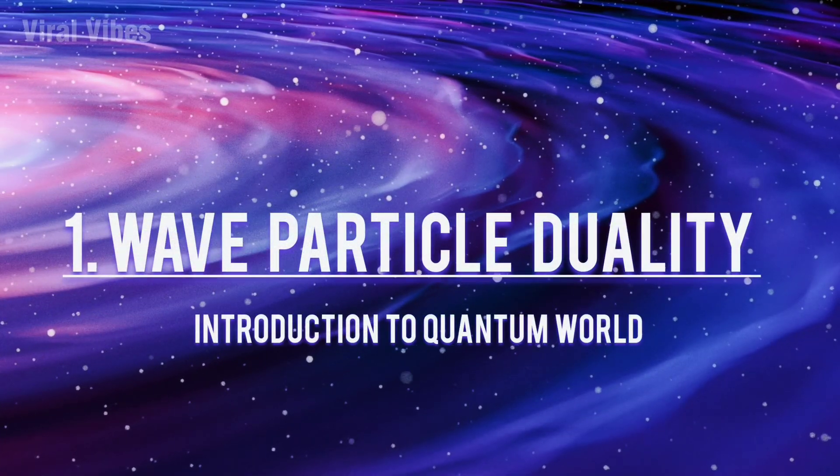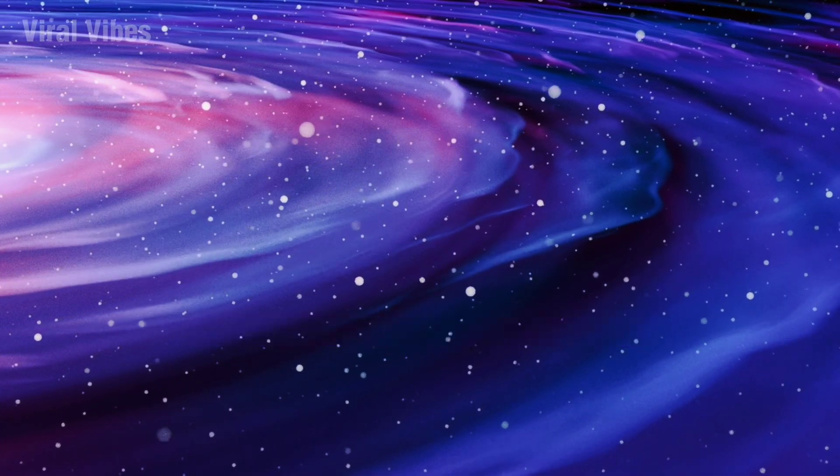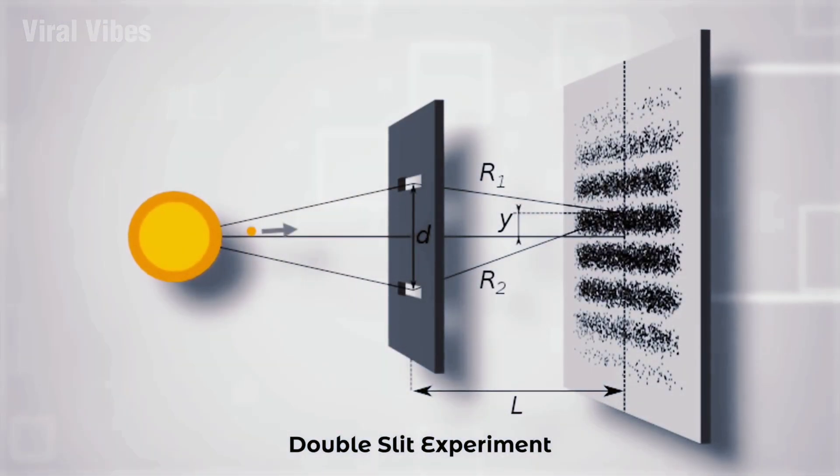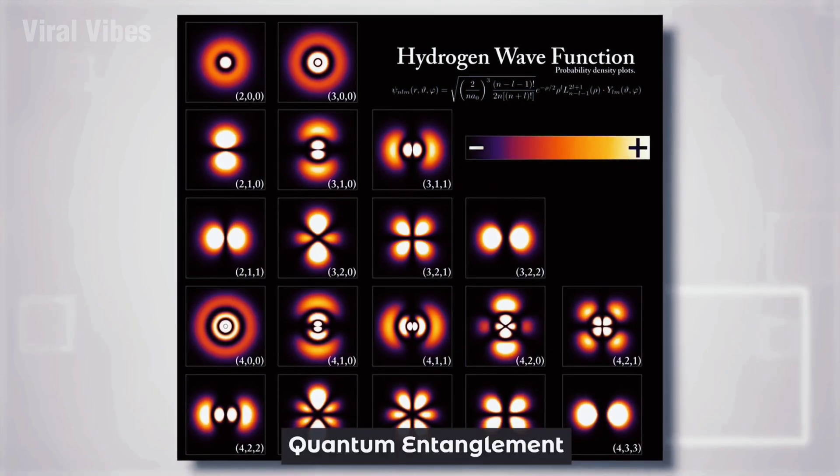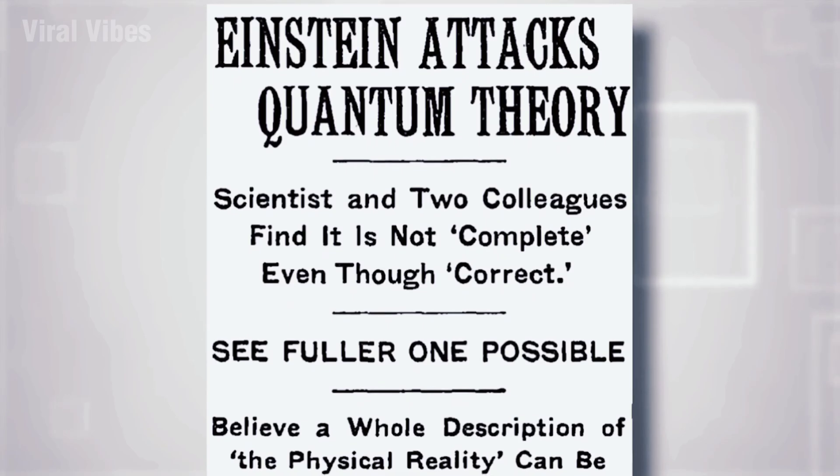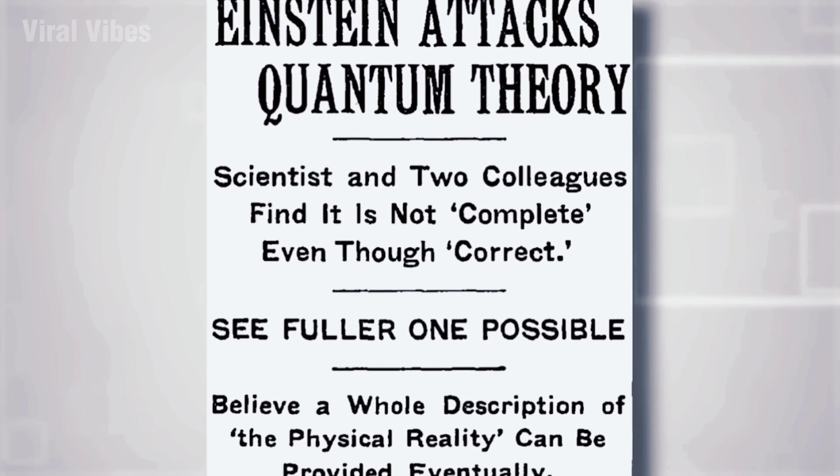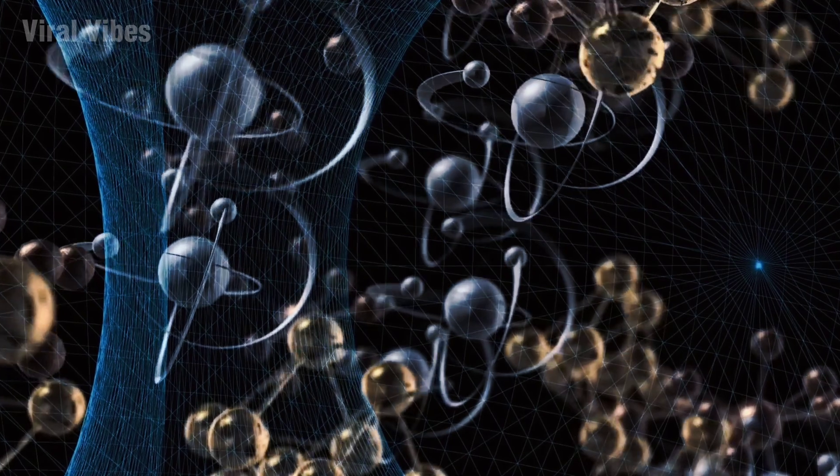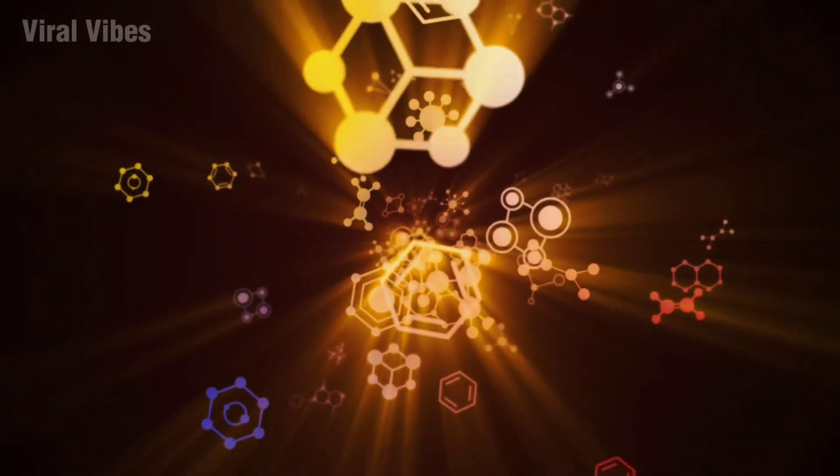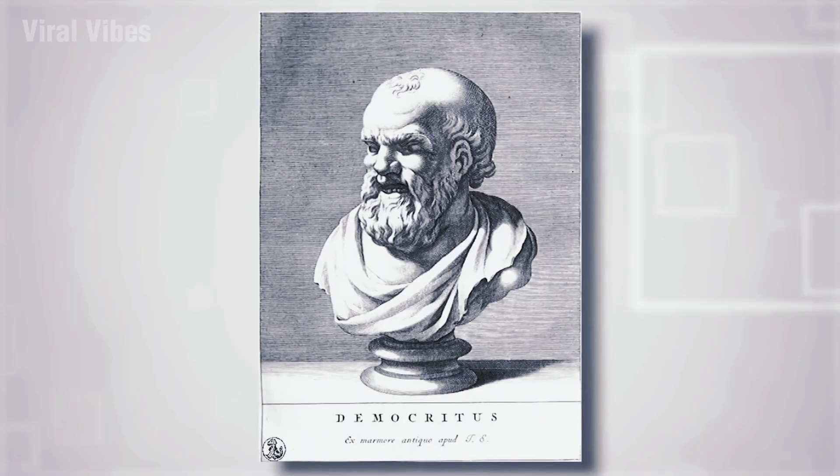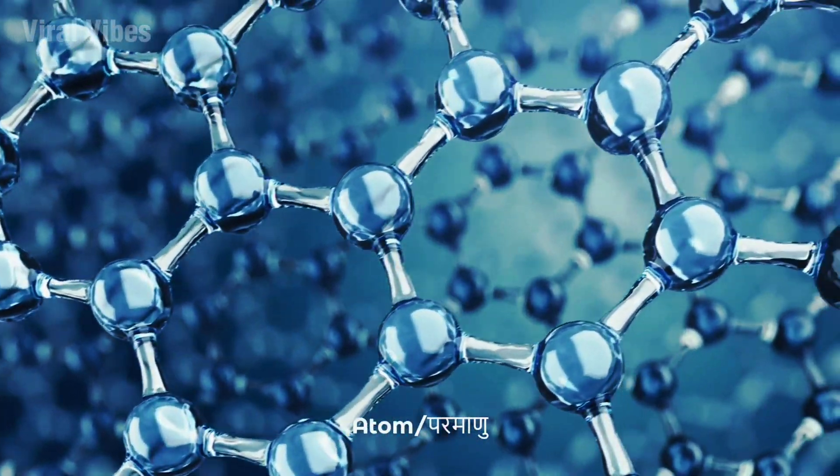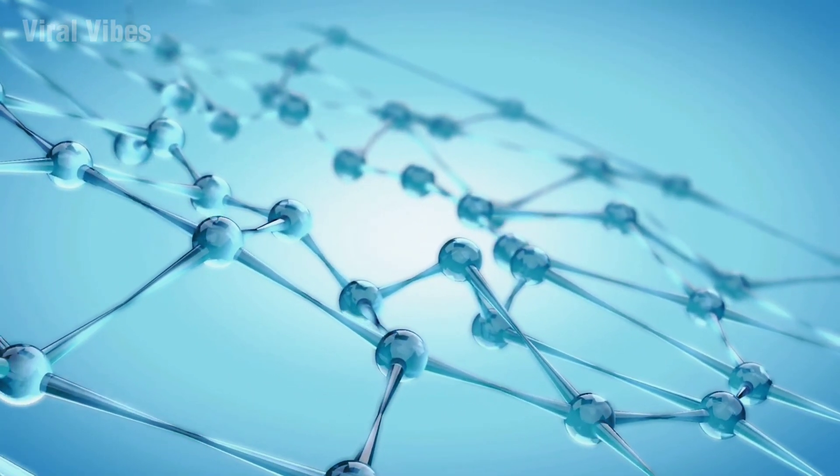First, wave-particle duality. A new way of looking at the world emerged with a fascinating experiment called the double-slit experiment. It made scientists question their beliefs because the results were hard to accept. In this video, we'll explore what the experiment is and what it taught us. Throughout history, people wanted to understand the world at its finest level. They believed everything was made up of tiny, invisible particles called atoms. Eventually, experiments confirmed this atomic theory.